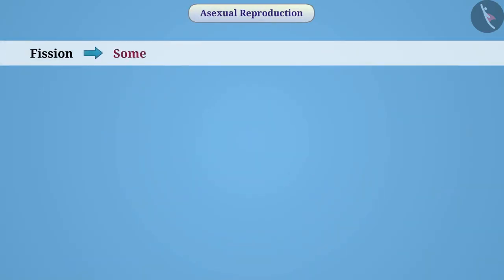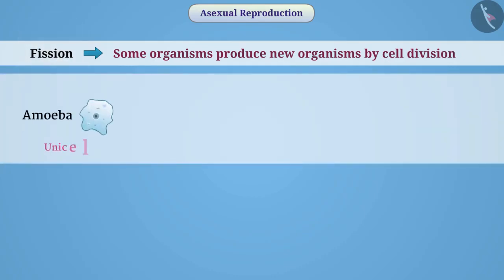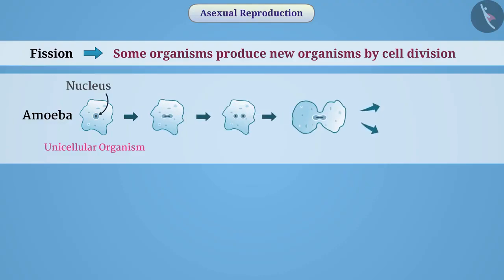Fission. Some organisms produce new organisms by cell division — we call this method fission. Amoeba is a unicellular organism. In amoeba, reproduction begins with the division of the nucleus. When division of the nucleus is complete, the cell also divides into two parts. This division can occur from any part of the amoeba, and each resulting cell carries one nucleus. The formation of two cells by the division of one cell is called binary fission.